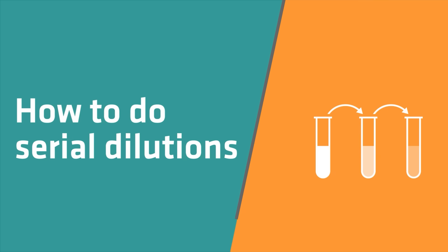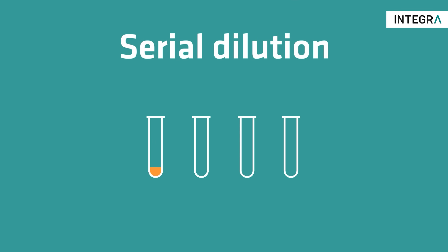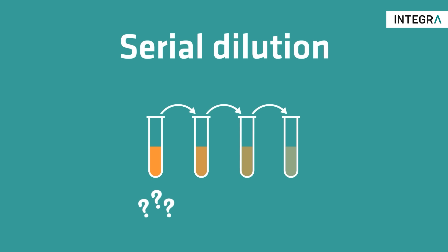In this video, we're going to explain how to perform a serial dilution. A serial dilution is a stepwise series of dilutions where the dilution factor stays the same for each step. The purpose of a serial dilution is to estimate the initial concentration of a sample or to obtain the desired concentration of a reagent, chemical, or compound.